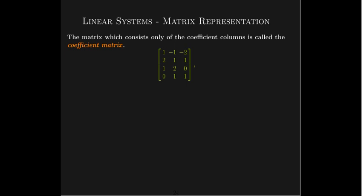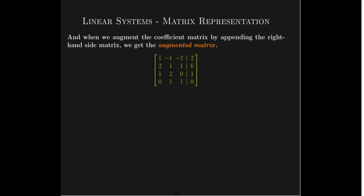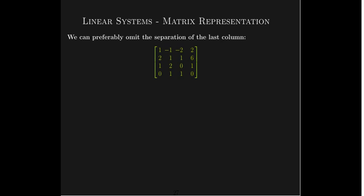We have a lot of vocabulary in this class, but these particular matrix names are easy to remember because they're very descriptive. If I only focus on the coefficients — the first column being coefficients on x1, the second on x2, the third on x3 — I call that the coefficient matrix. And if we make the right-hand side into its own matrix, we call it the right-hand side matrix. Only when we put them together — the coefficient matrix with the right-hand side matrix appended to it — do we call it the augmented matrix.